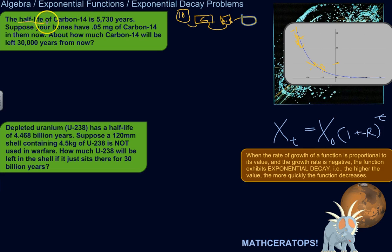So, the half-life of carbon-14 is 5,730 years. Suppose your bones have 0.05 milligrams of carbon-14 in them now. About how much carbon-14 will be left 30,000 years from now. A little bit of a morbid example, but this is reality. So check it out.